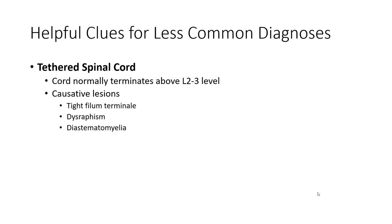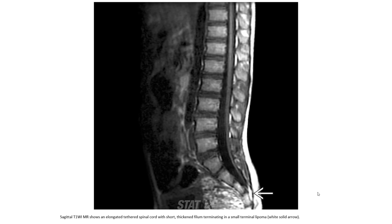Tethered spinal cord: the cord normally terminates at about the L2-3 level. Conus lesions include thickened filum terminale, diastematomyelia, and dermoid. Sagittal T1WI shows an elongated tethered spinal cord with a short thick filum terminale terminating in a small terminal lipoma.